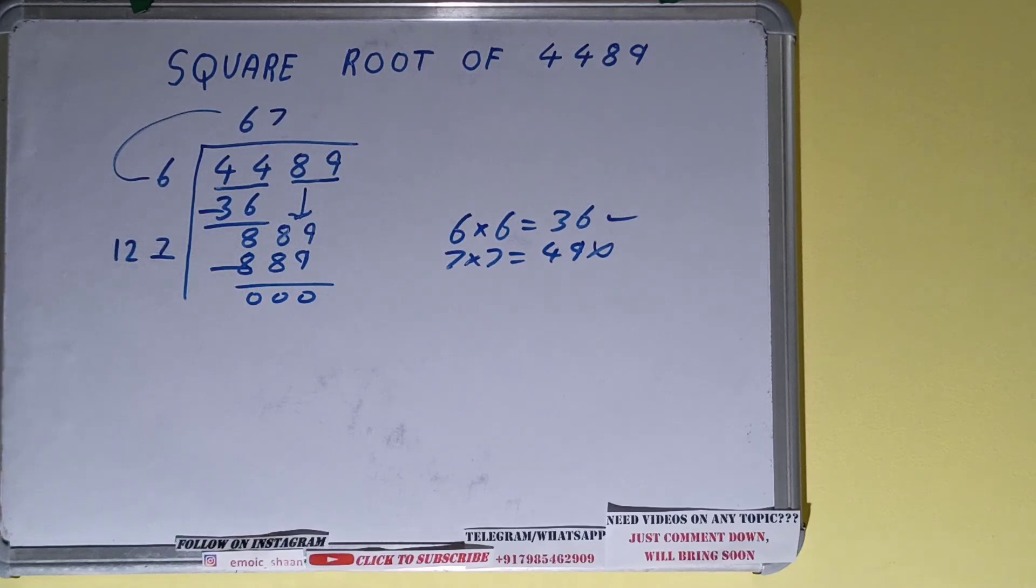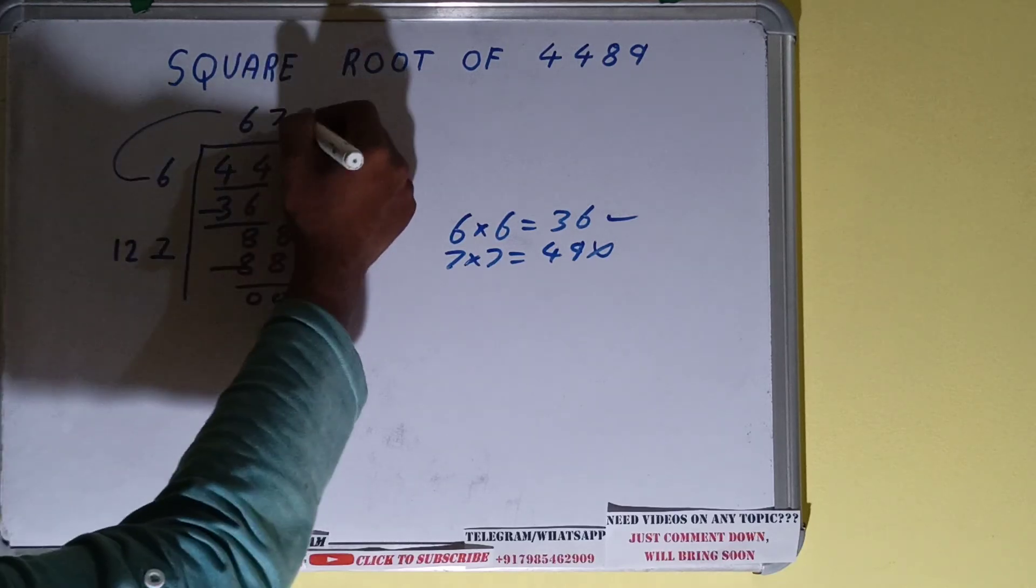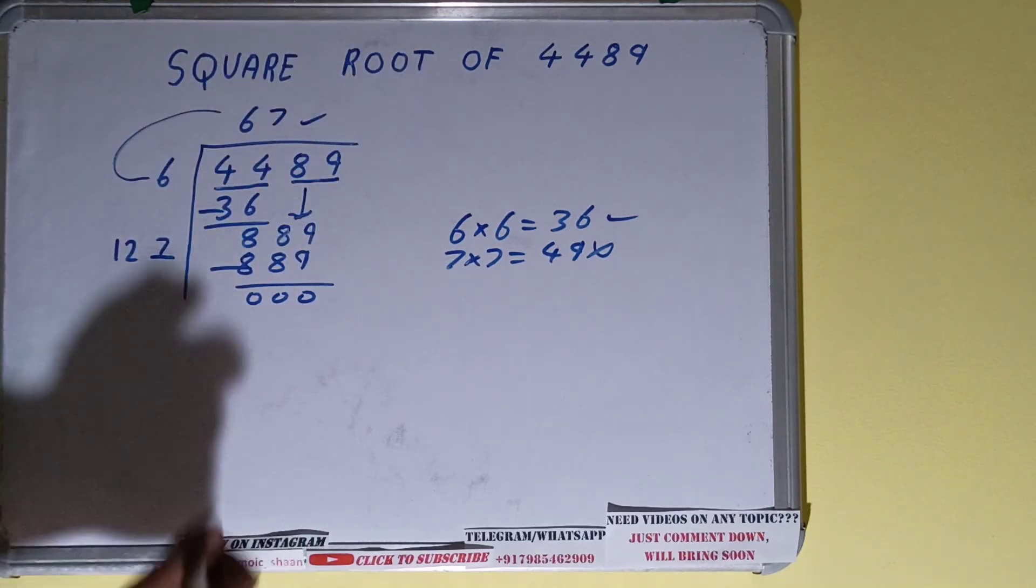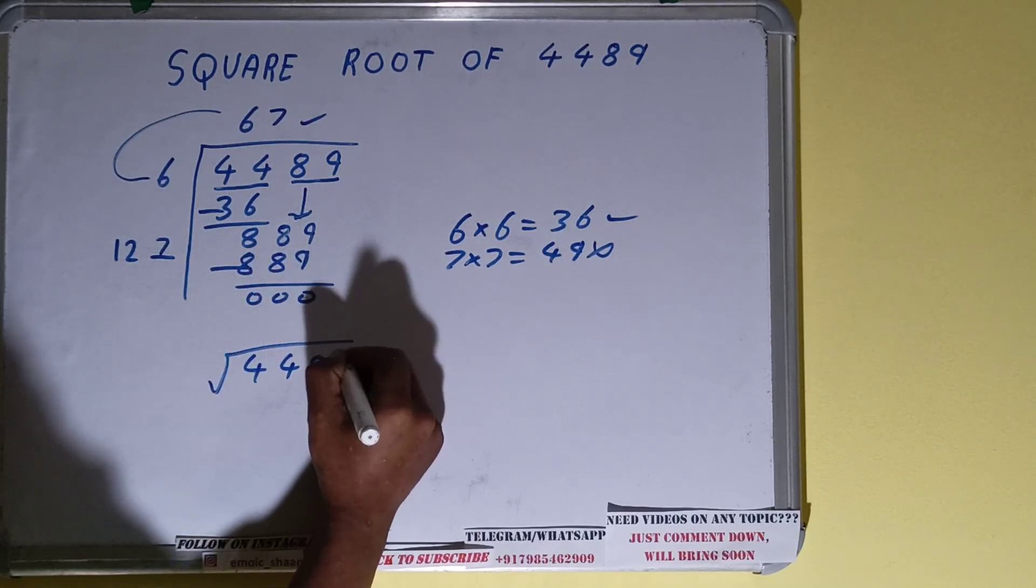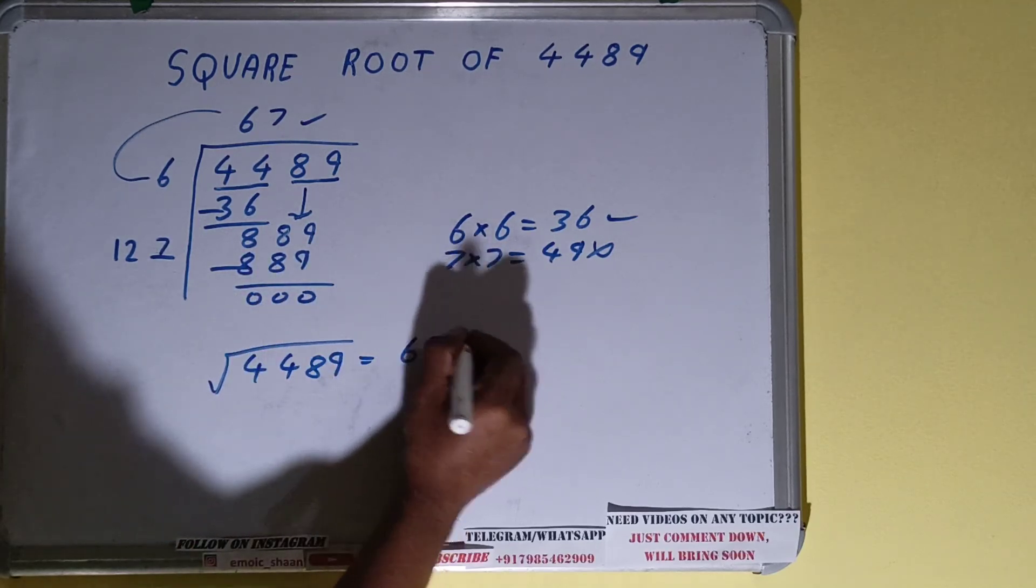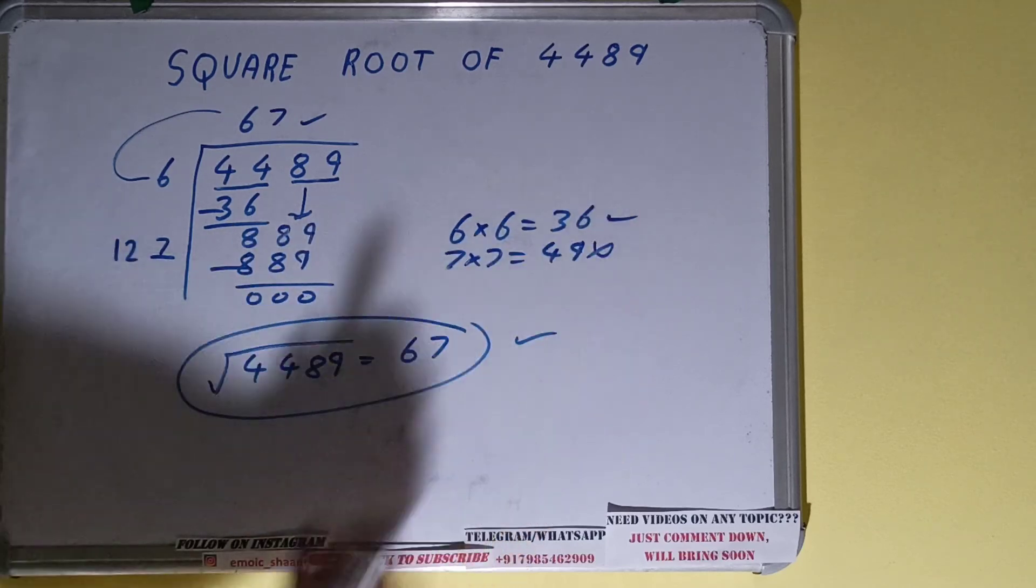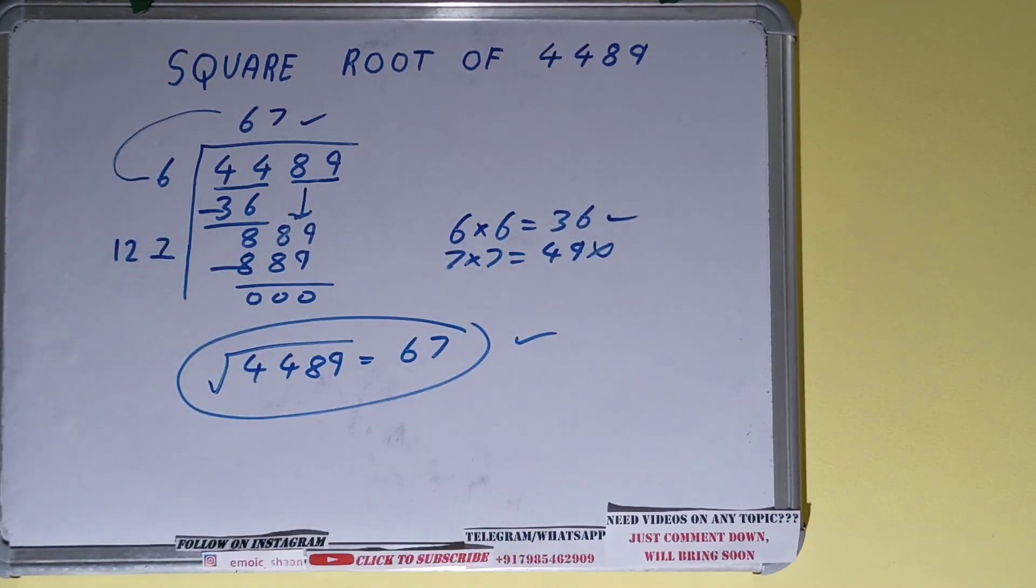Once you get remainder as zero, whatever is in the quotient will be your answer. So square root of 4489 is equal to 67. That's it. This will be your answer.